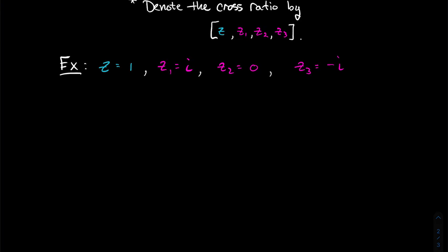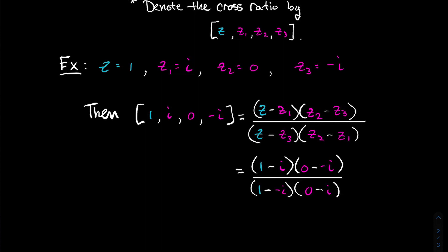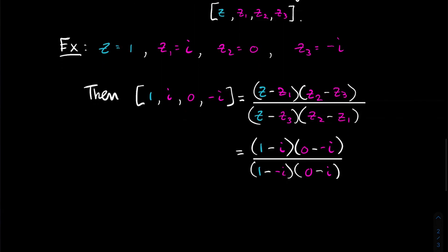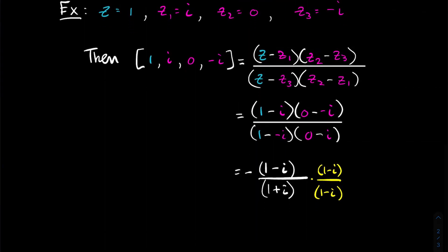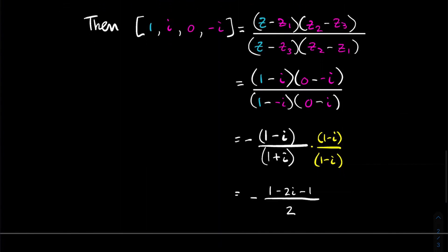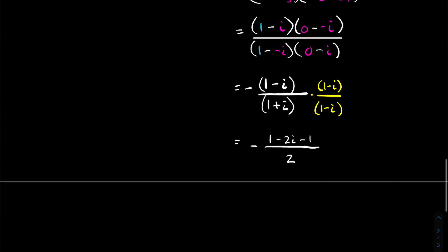Let z = 1, z1 = i, z2 = 0, z3 = −i. Then plugging into the formula, doing a bit of algebra — multiplying top and bottom by the conjugate of the denominator — we get 1 − 2i − 1 over 2, with a big minus sign out front, and it works out to i. If the algebra is wrong, let me know in the comments.